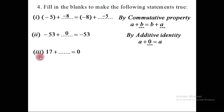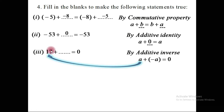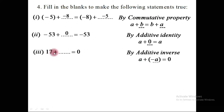Sub-number 3: 17 plus blank equals 0. We find the value using the additive inverse. In additive inverse, an integer added with its additive inverse gives 0. Here A is 17, so adding minus 17 gives 0. The blank is minus 17.